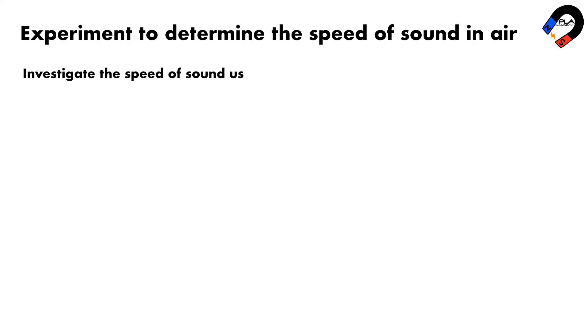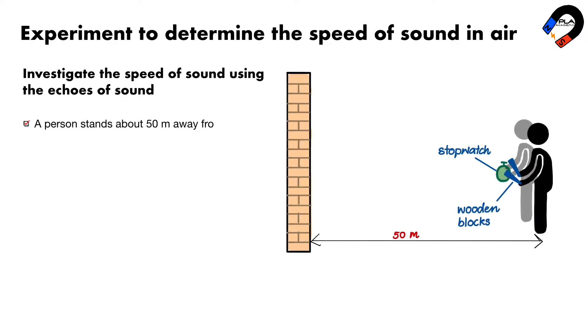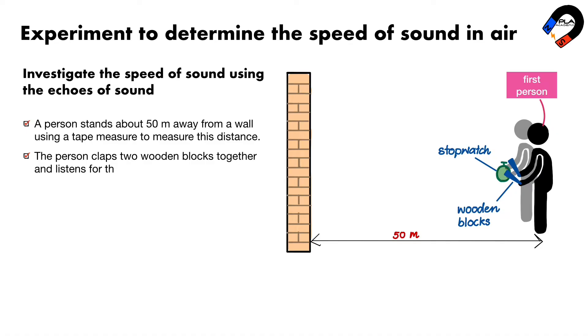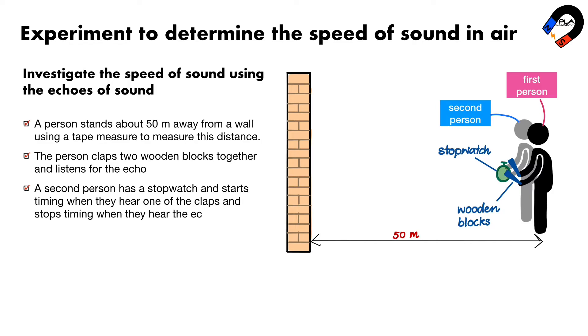Investigate the speed of sound using the echoes of sound. The echoes of sound is caused by the reflection of sound. A person stands about 50m away from a wall using a tape measure to measure this distance. The person claps two wooden blocks together and listens for the echo. A second person has a stopwatch and starts timing when they hear one of the claps and stops timing when they hear the echo.